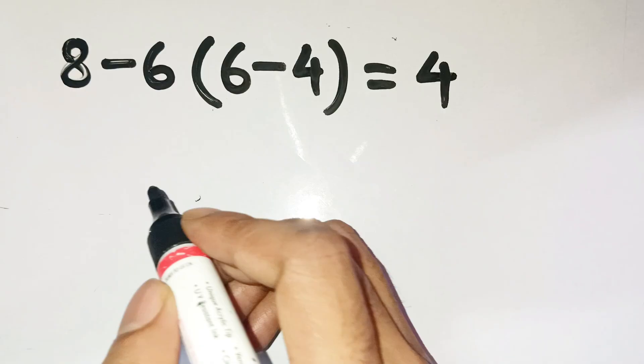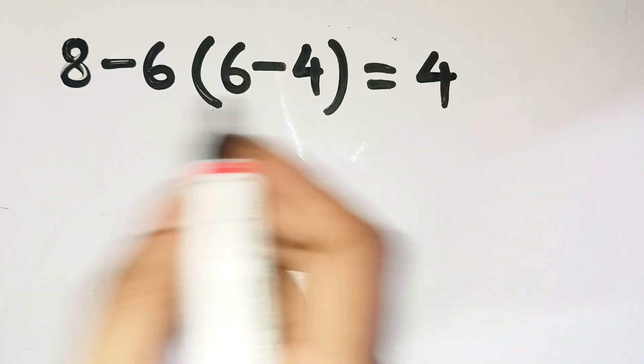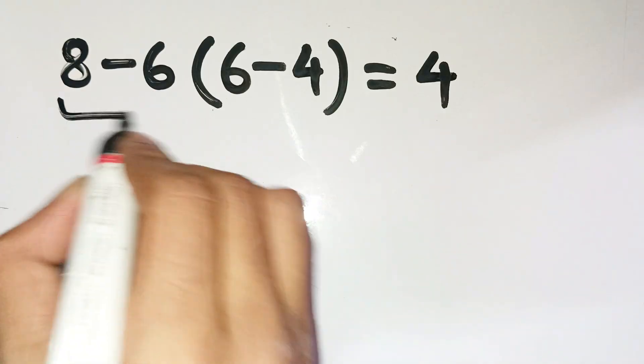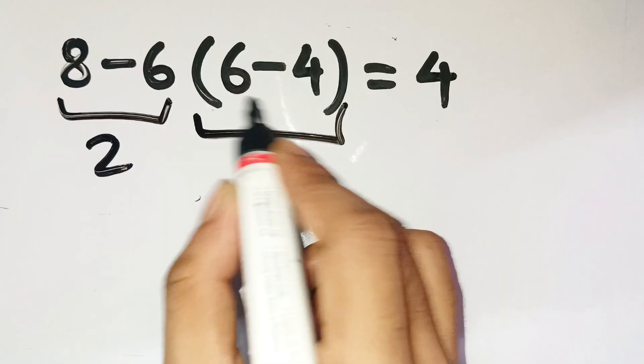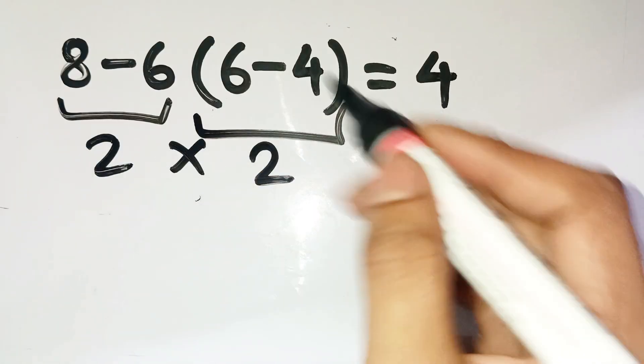Almost everyone glances at this and confidently says, oh easy, eight minus six is two, and inside the parentheses, six minus four is two, so two times two is four. Done.